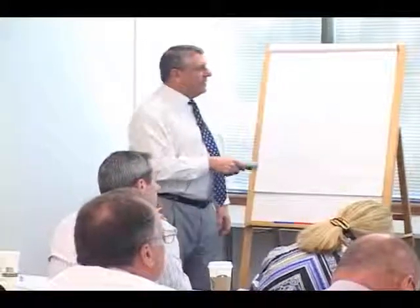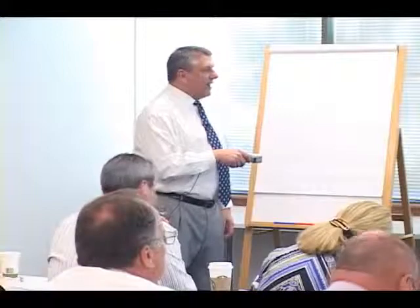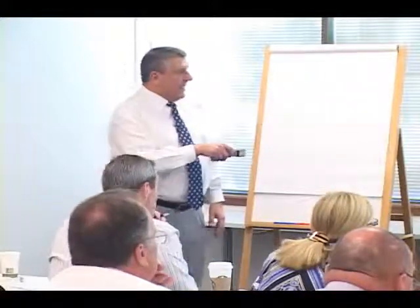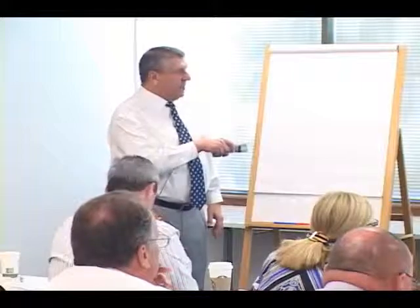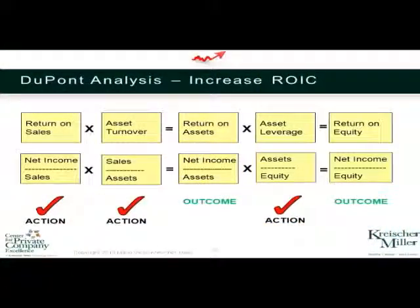When you drive net income, drive cash flow, and increase your asset turnover ratio, the math works out — this is like algebra. If you take those two fractions and eliminate sales, you end up with net income over assets. That's return on assets.